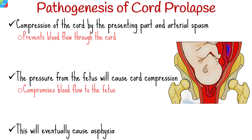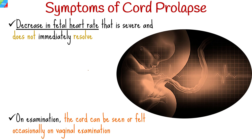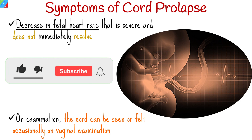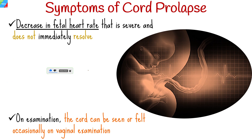The common sign and symptom is a sudden decrease in fetal heart rate that is severe and does not immediately resolve, often occurring after membrane rupture. On examination, the cord can be seen or felt occasionally on vaginal examination, particularly with overt cord prolapse.